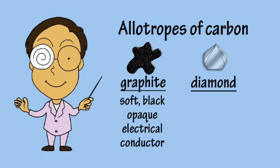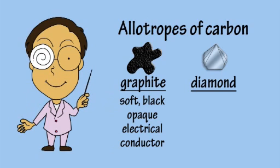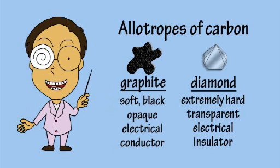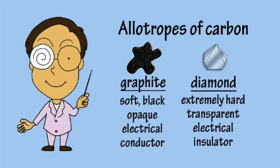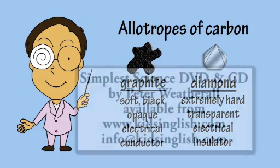Graphite is a soft, black, opaque material and is an electrical conductor, whereas diamond is the hardest naturally occurring material, is transparent and an electrical insulator.